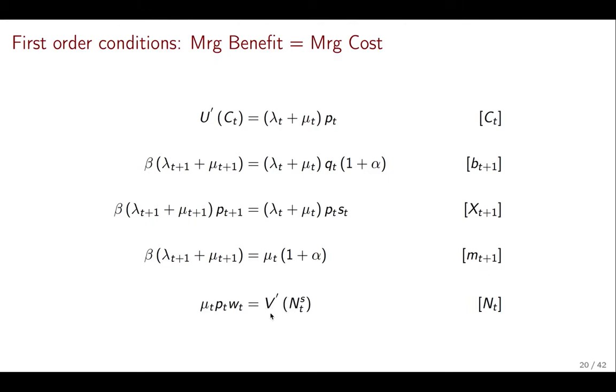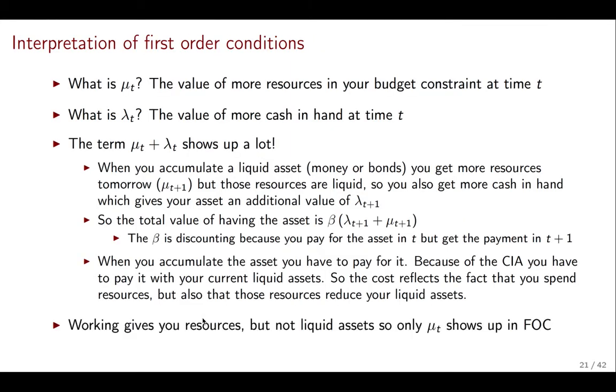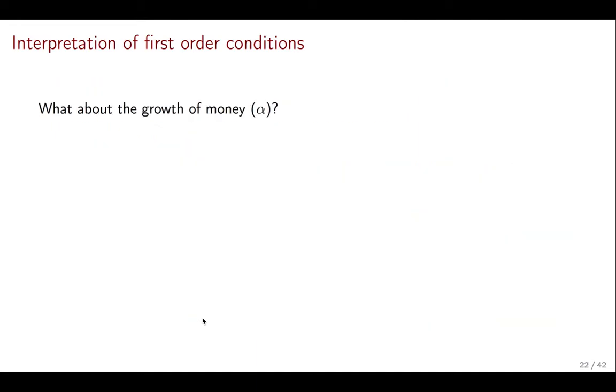That's kind of different to what happens with labor. The cost of labor is, of course, in terms of disutility. But the benefit of labor only shows up in the budget constraint because you get paid after you've made all your other expenditures. So this one only has a μt. So that's important for you to know. And that's what I'm saying in this last line.